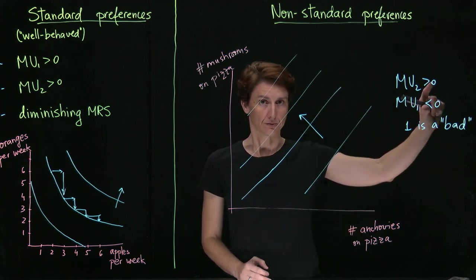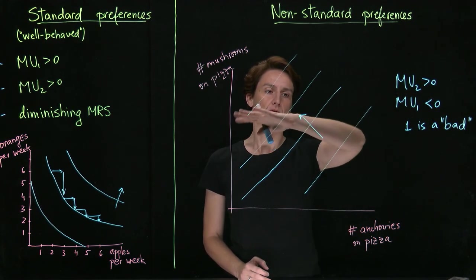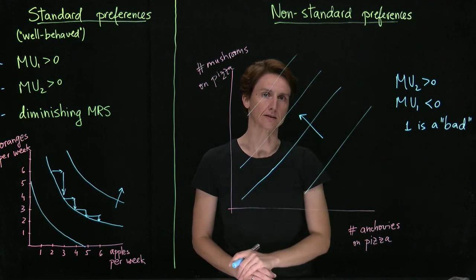Note that if they were both negative, then we would have to get back to downward sloping indifference curves.